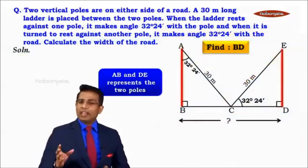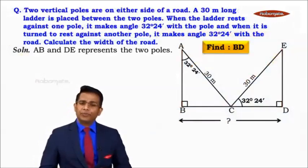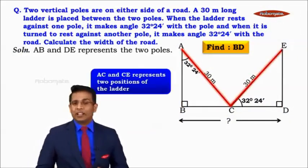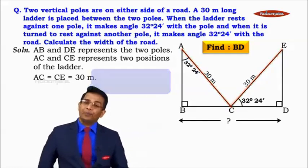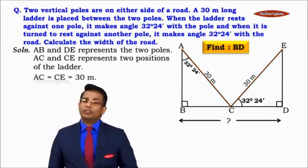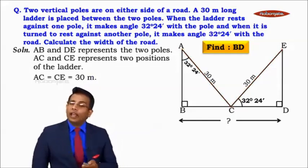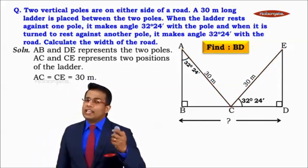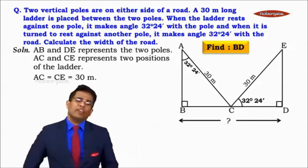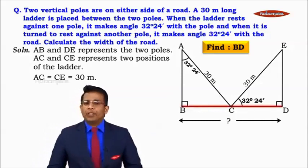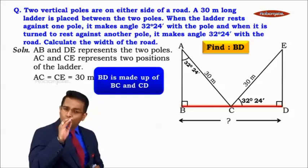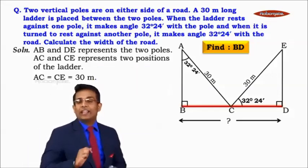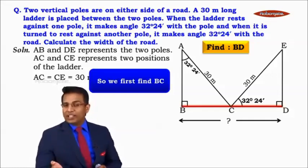AB and DE represent the two poles. AC and CE represent the two positions of the ladder, with AC = CE = 30 meters. Angle BAC = 32 degrees 24 minutes, and angle ECD = 32 degrees 24 minutes. We need to find BD, the width of the road. BD is made up of two parts: BC and CD, so we find each separately.